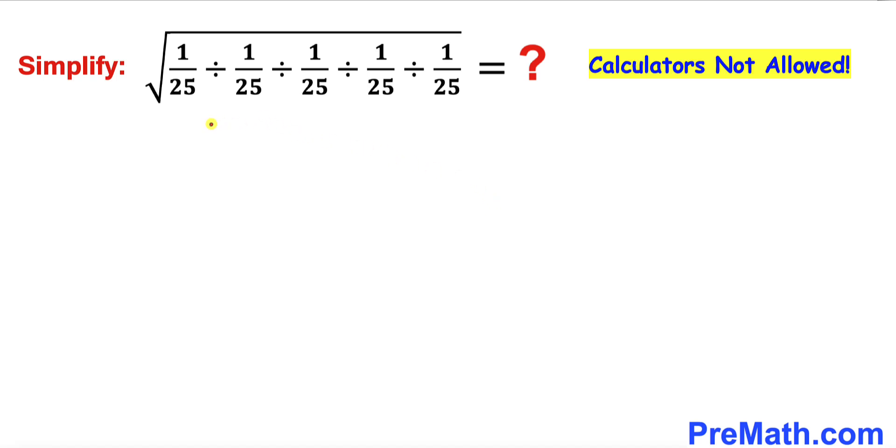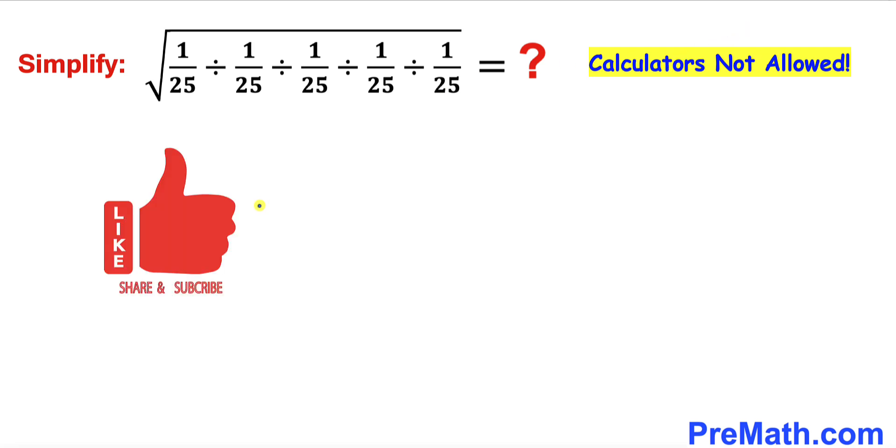In this video we are going to simplify this given interesting radical problem: square root of 1 divided by 25, divided by 1 over 25, divided by 1 over 25, divided by 1 over 25, and finally divided by 1 over 25. We are not supposed to be using our calculators. Please don't forget to give a thumbs up and subscribe. Let's go ahead and get started.